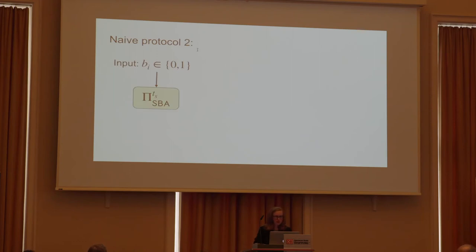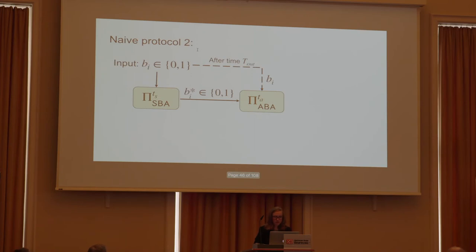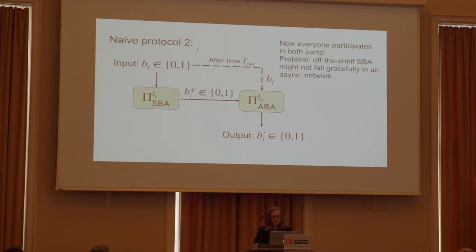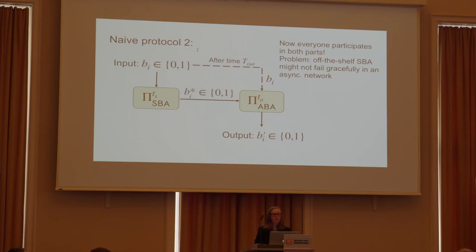To fix that, we have everyone run the synchronous phase and use whatever output they get as input for the asynchronous phase. This ensures everyone participates in both phases. But there's still another problem: the synchronous phase might not fail gracefully in an asynchronous network. For example, even if everyone has the same initial input and pre-agreement on zero, the synchronous phase could cause everyone to agree on one, and then they all enter the asynchronous phase with one — making it impossible to recover validity.